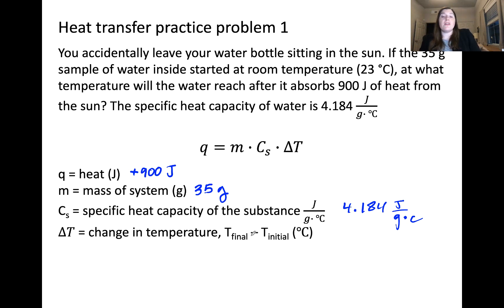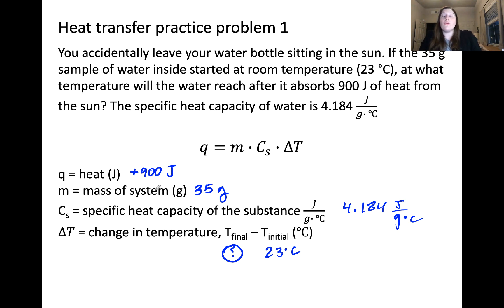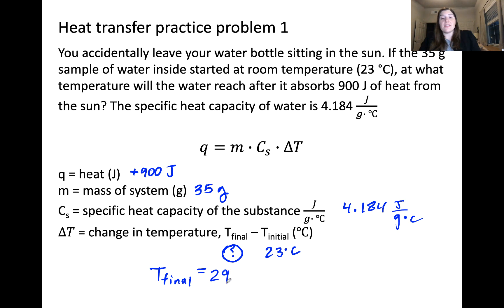The change in temperature is important here. We have an initial temperature of 23 degrees Celsius, and we need to find the final temperature after the water absorbs 900 joules. We would expect the water to get warmer, so the final temperature should be greater than the initial. Plugging in these values, the final temperature of the water is calculated to be 29 degrees Celsius. This makes sense because the final temperature is greater than the initial temperature.